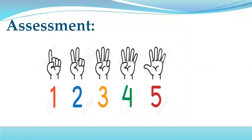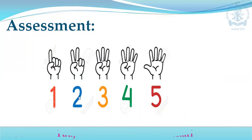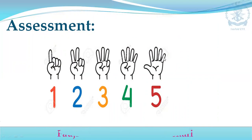How many fingers have been raised? What does this mean? This is one finger. One, two — this is two. One, two, three. Count with me: one, two, three, four. One, two, three, four, five. These are our five fingers.